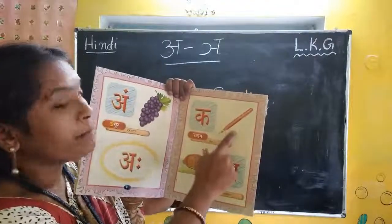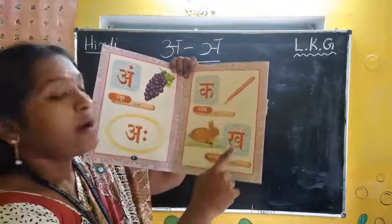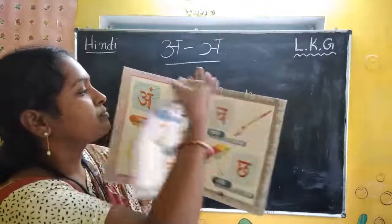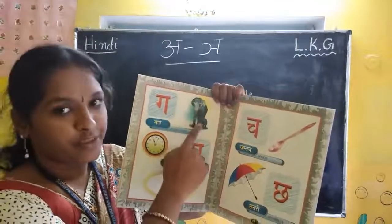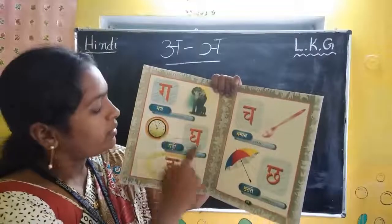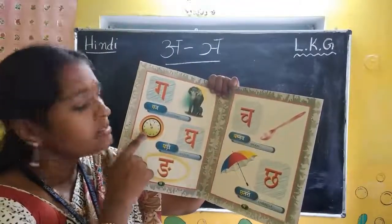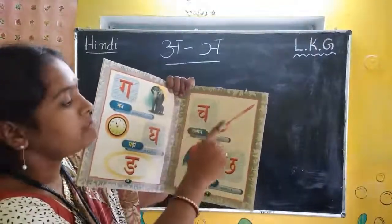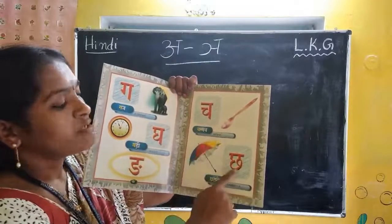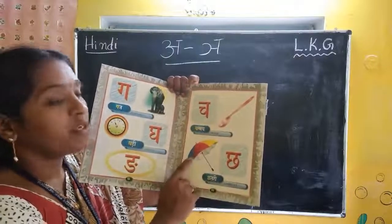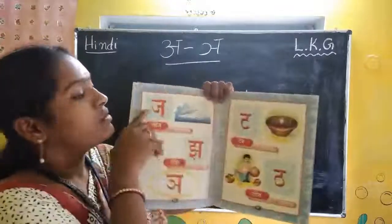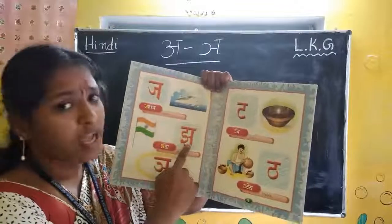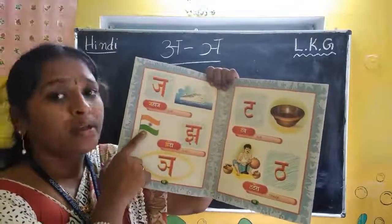Ka — Ka says kalam. Kalam means pen. Ka — Ka says khargosh. Khargosh means rabbit. Ga — Ga says gaaj. Gaaj means elephant. Gha — Gha says ghaadi. Ghaadi means watch. Cha — Cha says chamach. Chamach means spoon. Cha — Cha says chhatri. Chhatri means umbrella. Cha — Cha says jahaz. Jahaz means ship. Cha — Cha says machli. Machli means fish.